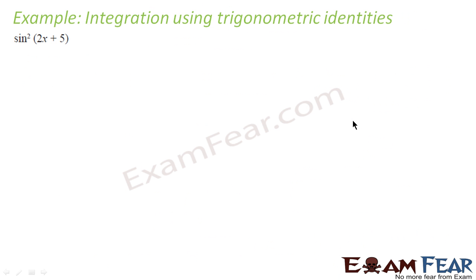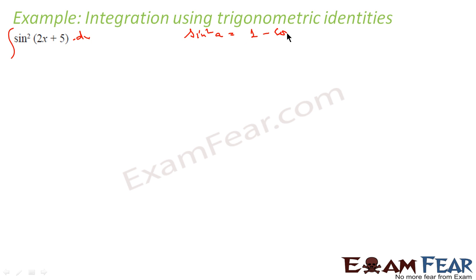Let's take one more question. This question will be very difficult to solve by substitution because if you take 2x plus 5 equal to t, it is not going to help much. So now we will use trigonometric formulas to simplify this. We know that sin square a is nothing but 1 minus cos 2a by 2.